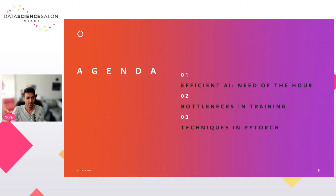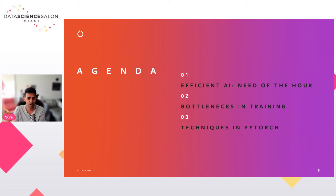In today's talk the agenda is pretty simple. First, we'll talk about how AI needs to be efficient and what the current state is. Then we'll touch upon some of the bottlenecks in training your models and inference, and along the way we'll cover certain techniques in PyTorch that help you optimize your training and inference code.